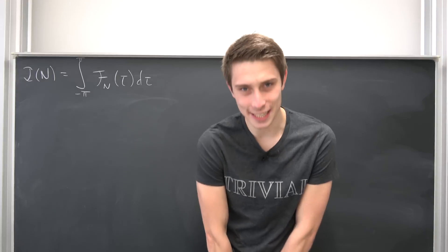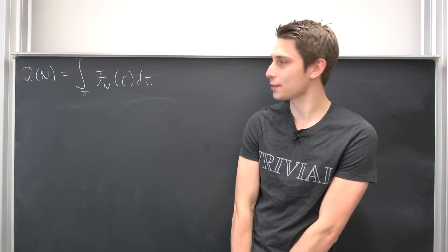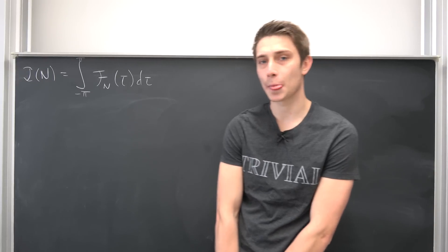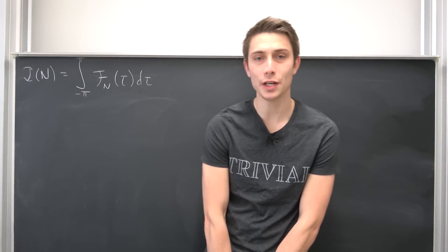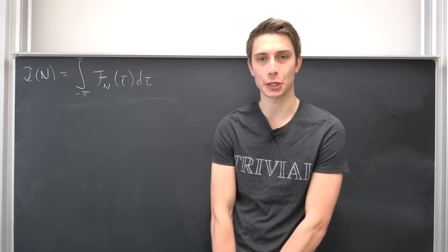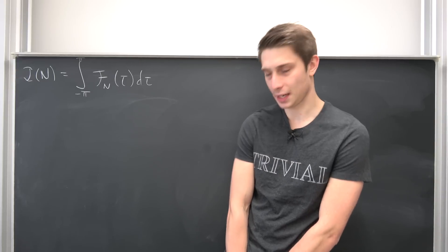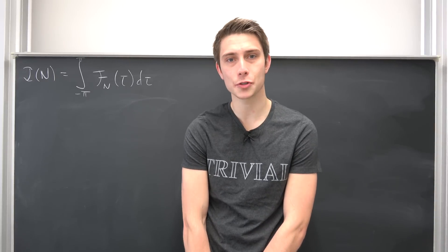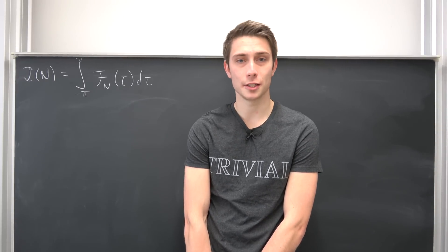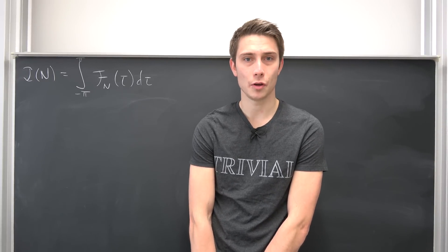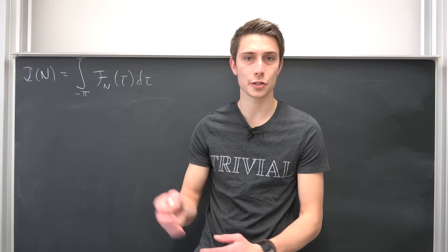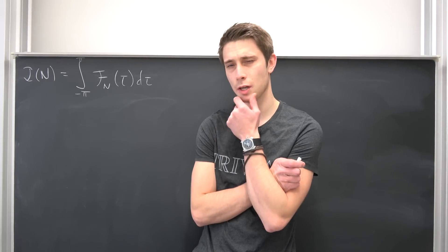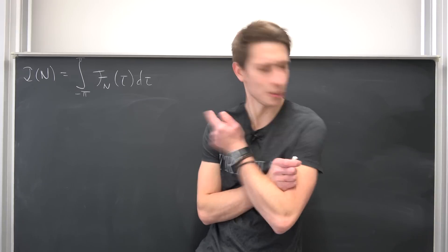So let's go ahead and get started today. We are going to integrate the Fejér kernel of the nth degree from negative pi to pi. There's something curious about those summability kernels right here — most of the time the integral over a period is going to give us one. It's just the case here too.